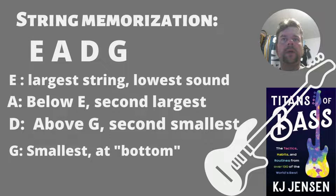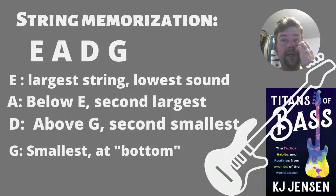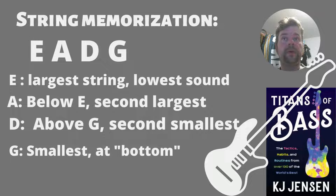Basically, the E string is the lowest sound and also the biggest string. G is the smallest string and the highest sound. So it's pretty basic — E-A-D-G. And if you look at it top to bottom, that's how it would lie.